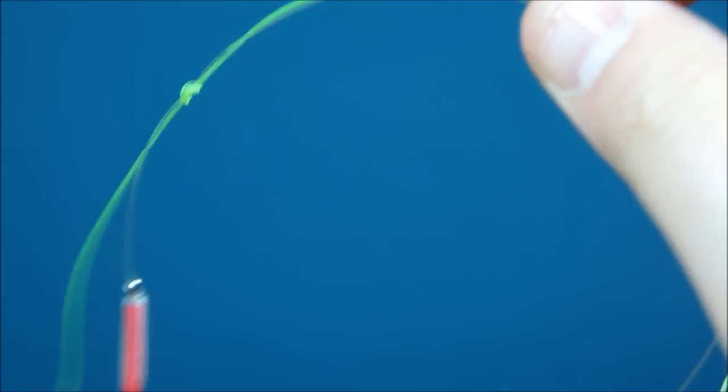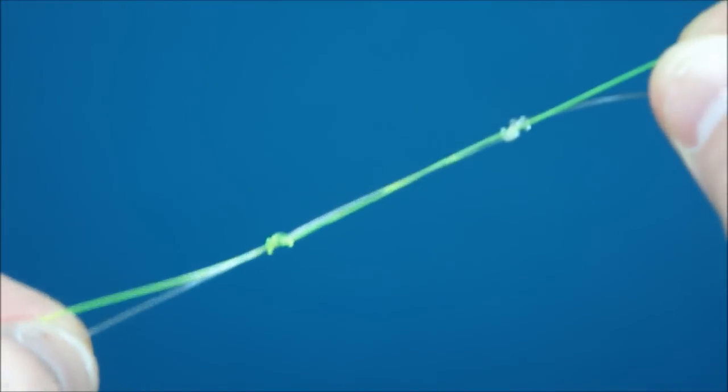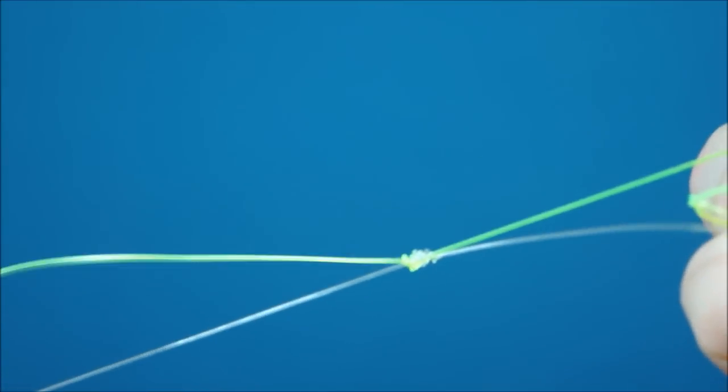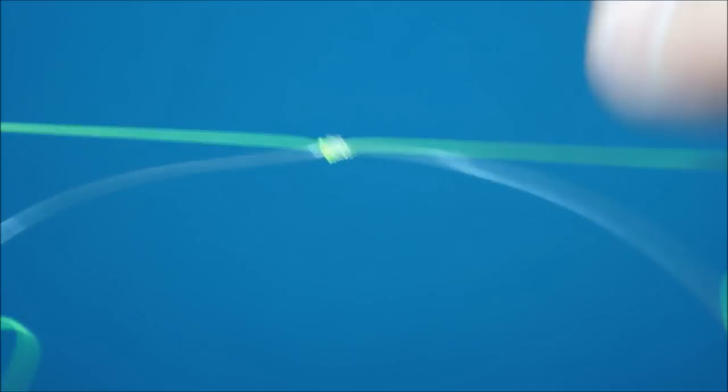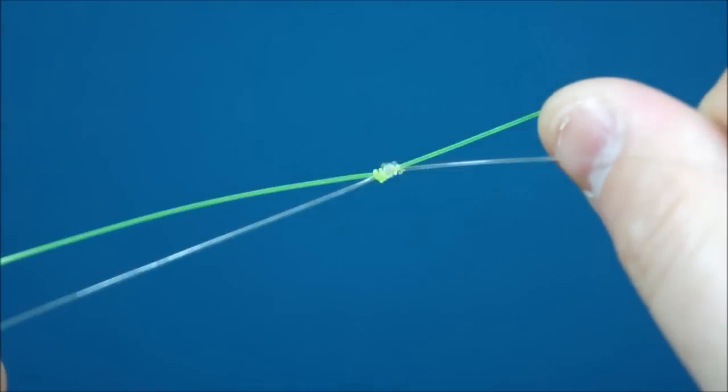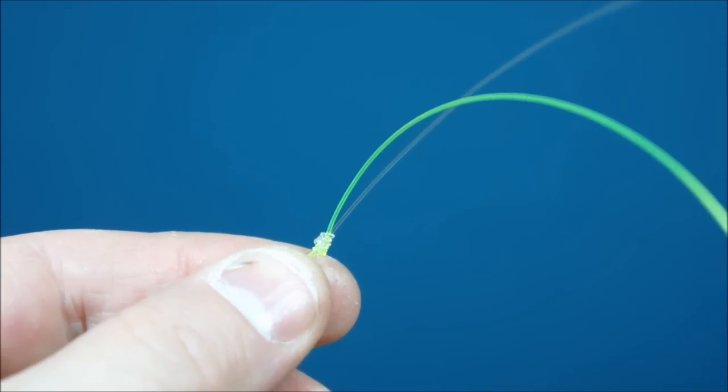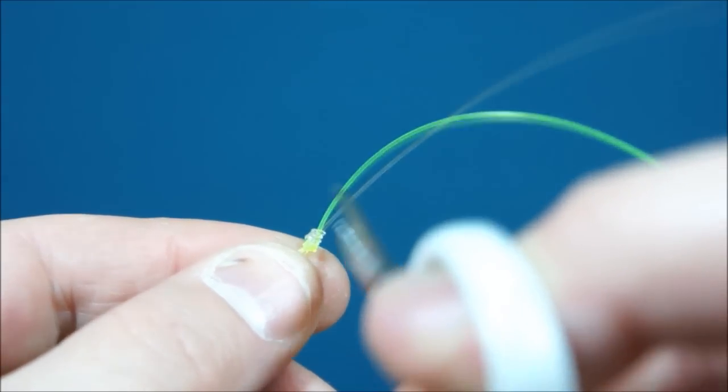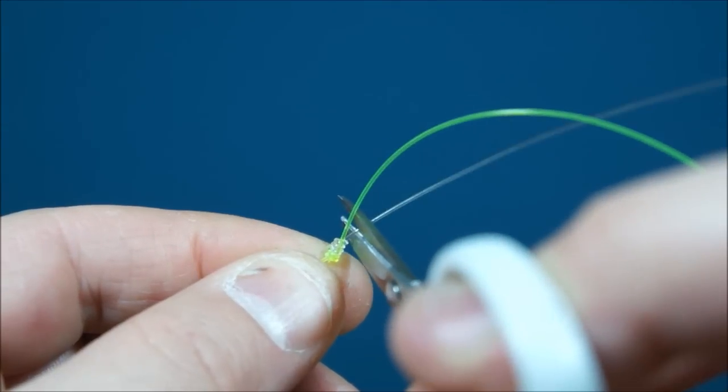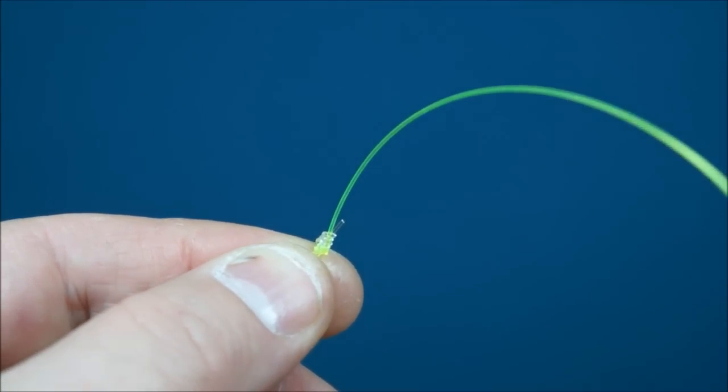So holding the main line I'm going to pull the layer and that knot tight now. Then back onto the main line and pull that tight. You can see the two knots there and what I'm going to do is trim the tag end. This is the end of the snood, leaving a few millimetres there just for safety.